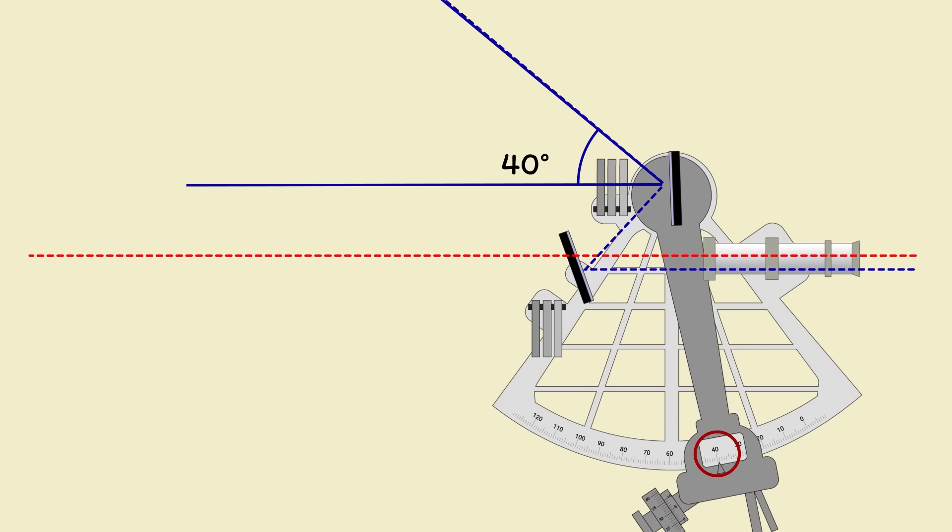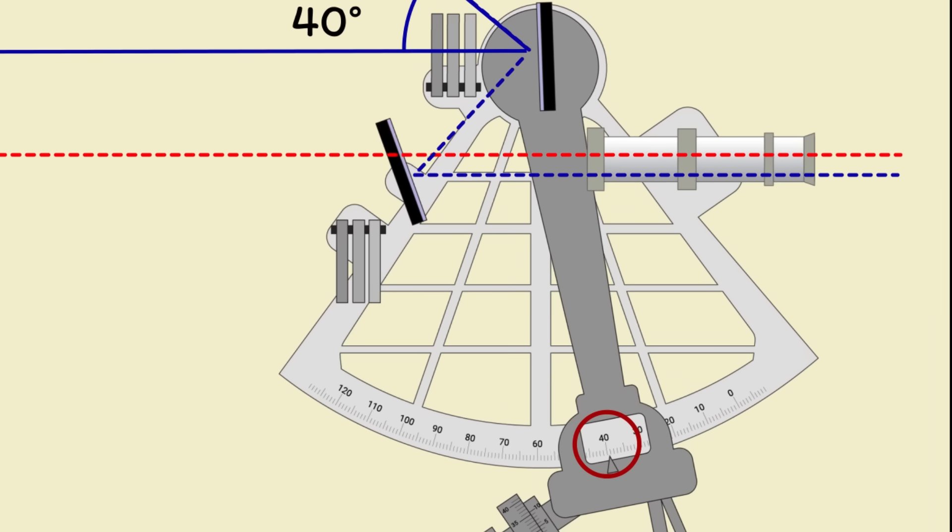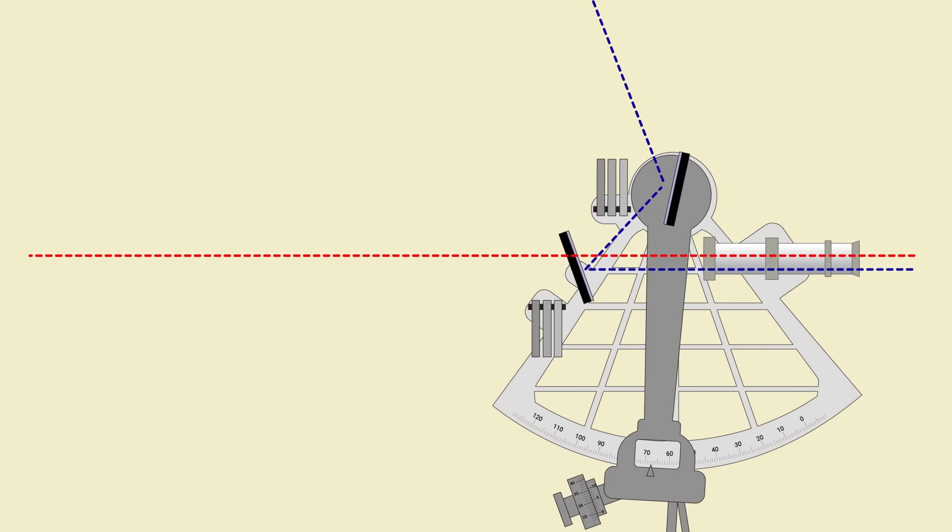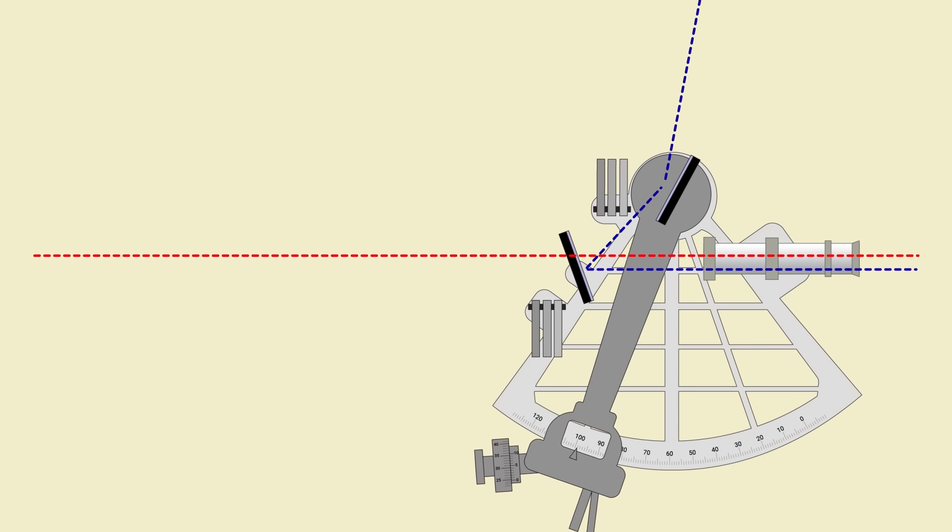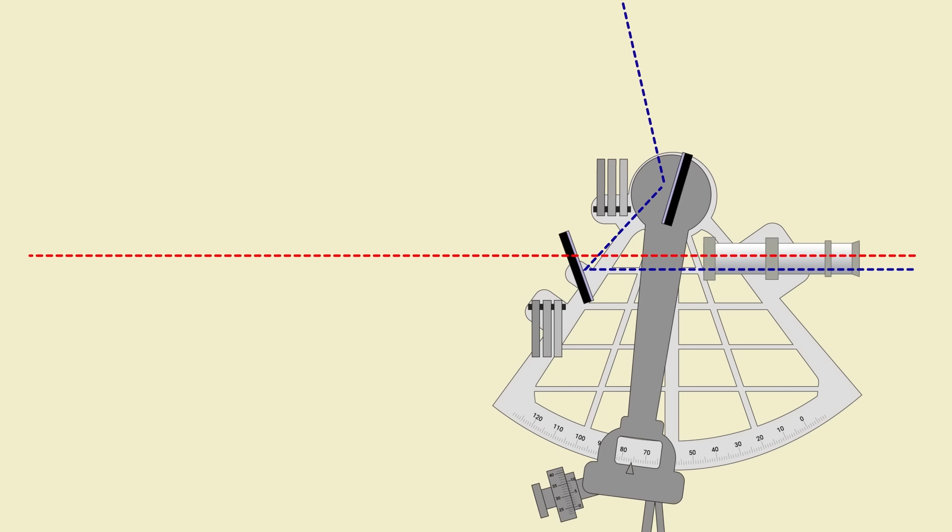The scale at the bottom has been calibrated to give the angle between the rays of light, not the direct angle of rotation of the index arm. This is why the scale reads all the way to 120 degrees across just 60 degrees of index arm rotation. Just look at that angle the sextant can measure at its extreme setting. This is the sextant's huge advantage over the instruments that came before it.